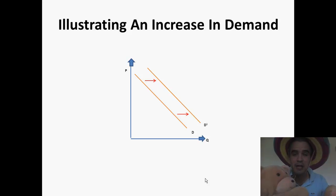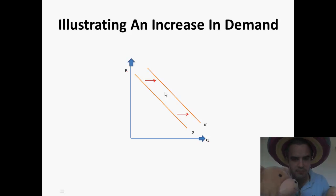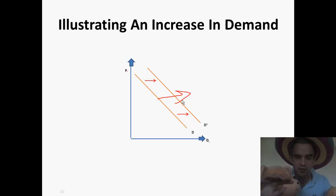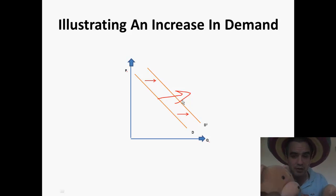Here's how we illustrate an increase in demand. We have price and quantity on the axes, our demand curve labelled D, shifting to D1. Make sure you label it D and D1 and draw these arrows. What's happening is a shift to the right in the demand curve — that's an increase in demand.